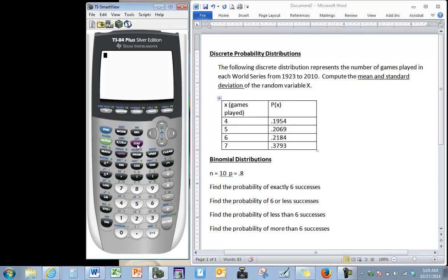The number of games played needs to go into L1 and our corresponding probabilities need to be listed under L2. A quick way to delete what's already in your table: move your cursor to the top, press clear and then enter.